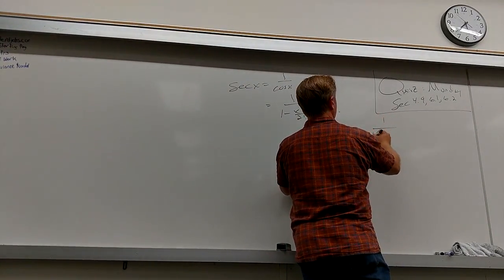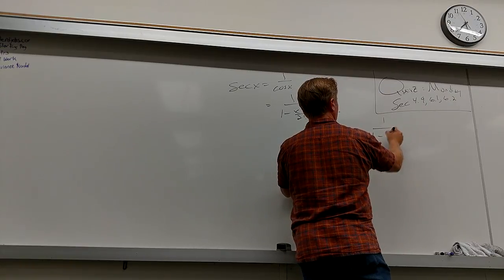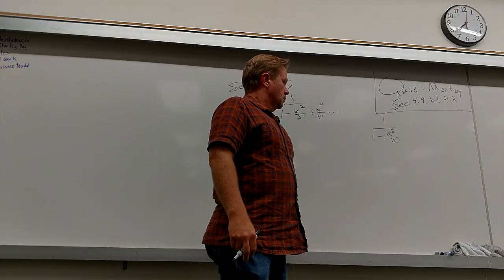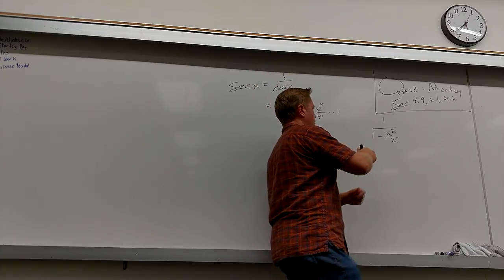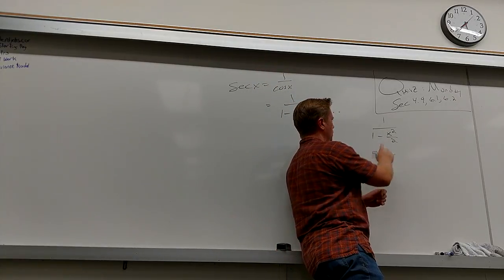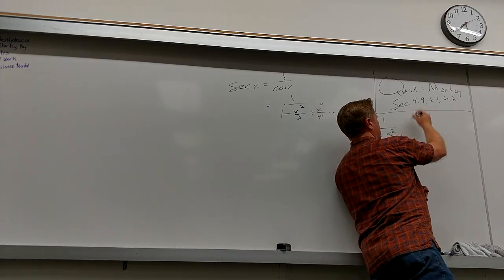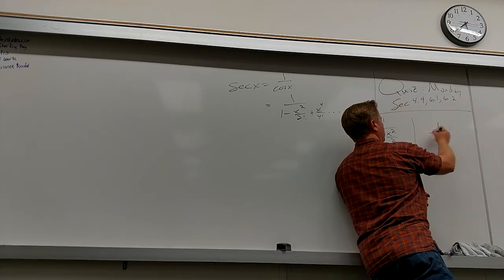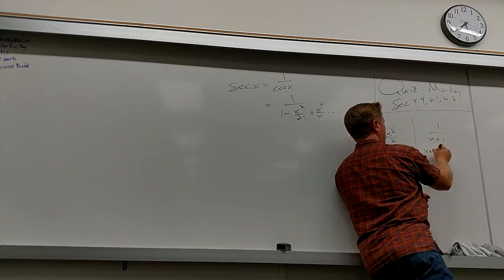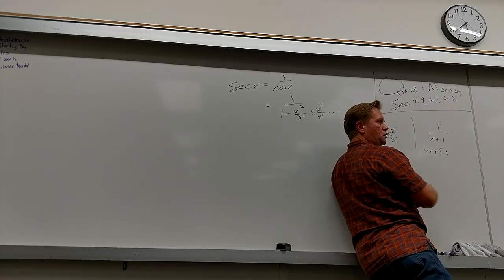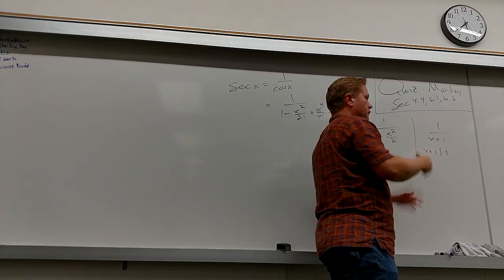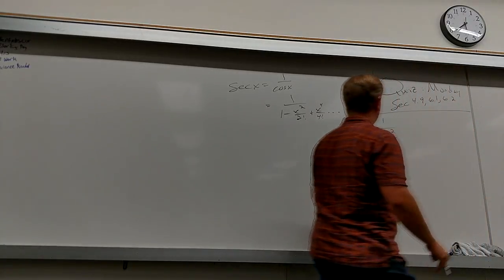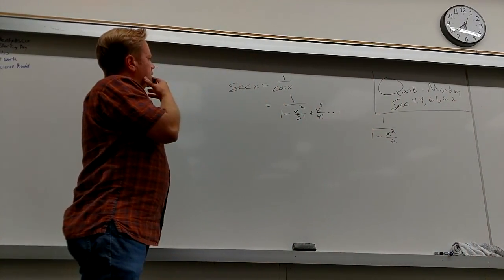Let's take the first couple of terms here. Can you actually do this division? If you try to do long division of 1 over x plus 1, it doesn't go in at all and you just have a remainder of 1 over x plus 1 — you're right back where you started. Normally when you do long division, you've got another series on top.